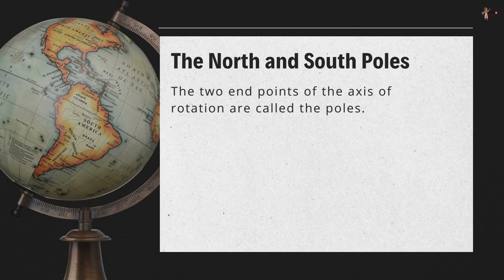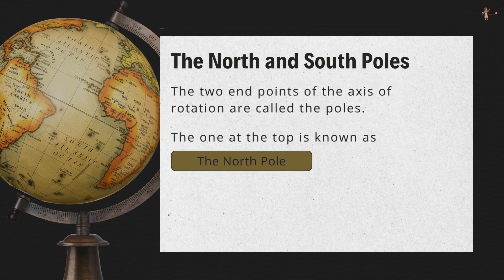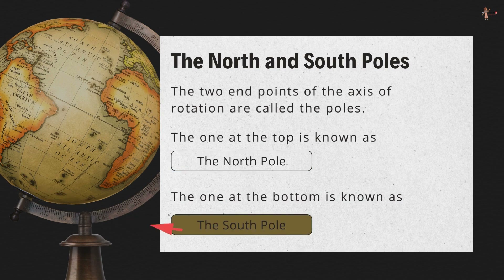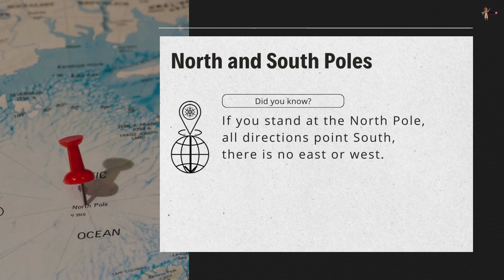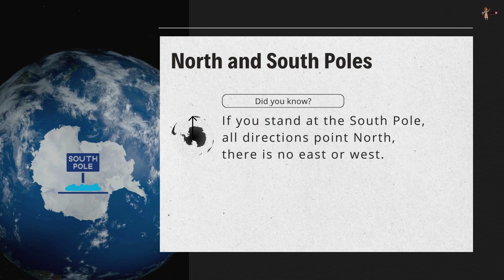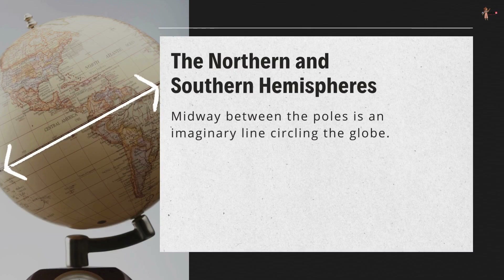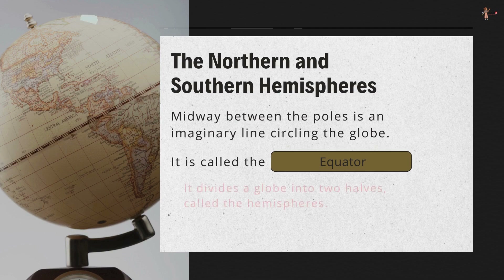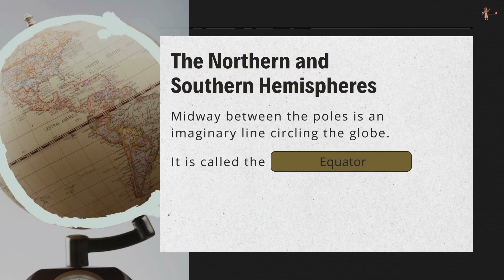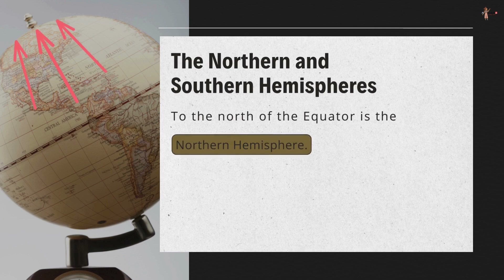The two endpoints of the axis of rotation are called the poles. The one at the top is known as the north pole and the one at the bottom is known as the south pole. If you stand at the north pole, all directions point south — there is no east or west. Similarly, if you stand at the south pole, all directions point north. Midway between the poles is an imaginary line circling the globe called the equator. It divides the globe into two halves called the hemispheres — the northern hemisphere to the north of the equator and the southern hemisphere to the south.